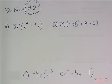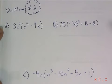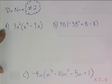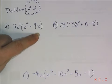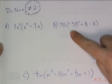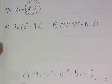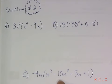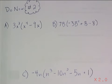Let's see how well you learn from the mistakes of others. On your paper, do now number 2 and draw a happy cloud around it. I've got three sample problems I want you to work out for yourself. Letter a: 3x squared times the quantity of x to the fourth power minus 9x. Letter b: 7b multiplied by the quantity negative 3b squared plus b minus 8. And letter c: negative 4n times the quantity n to the third power minus 10n squared minus 5n plus 1. Pause now and start again once you're done.